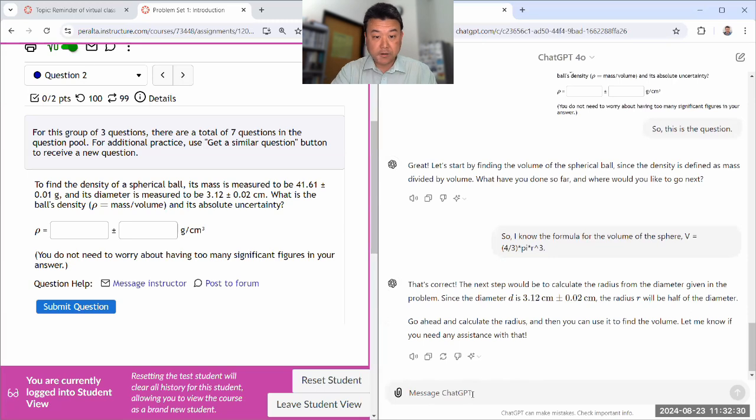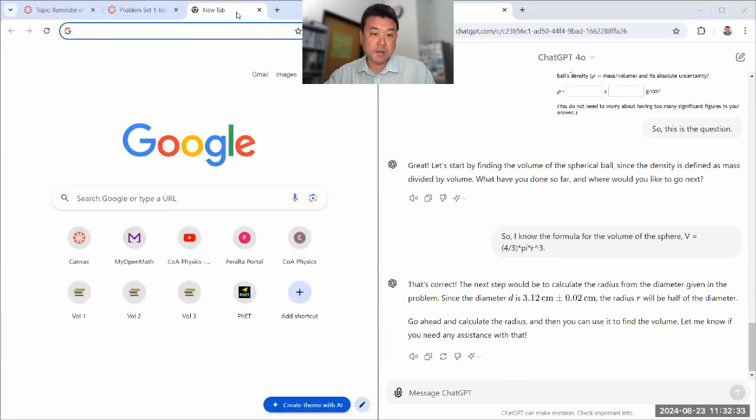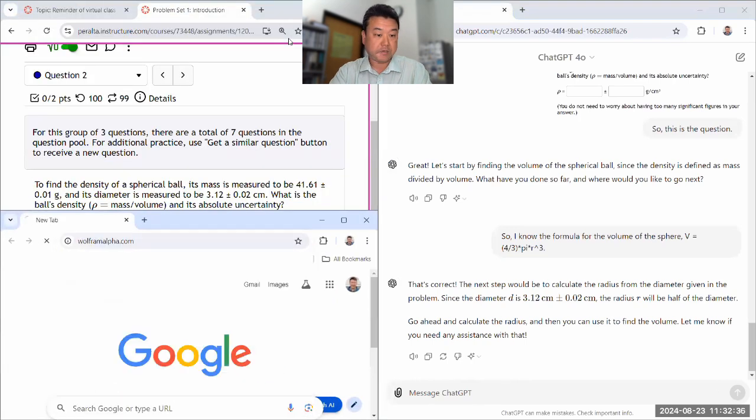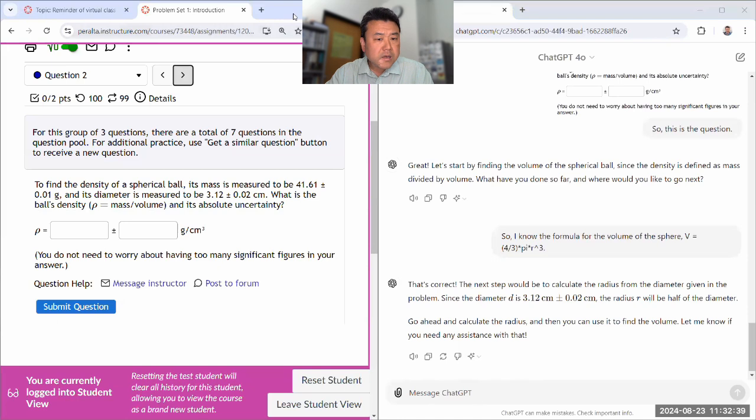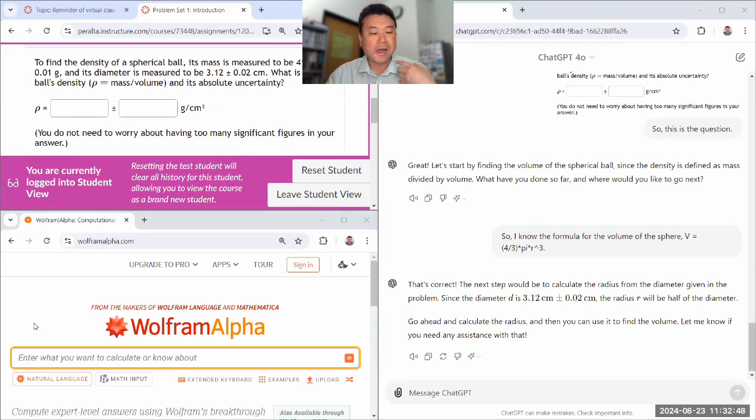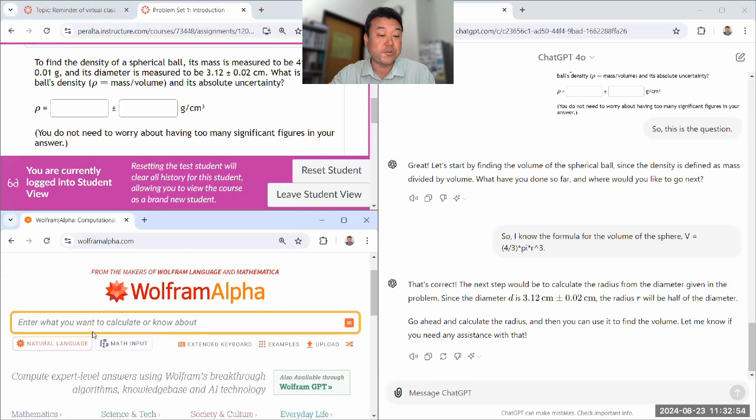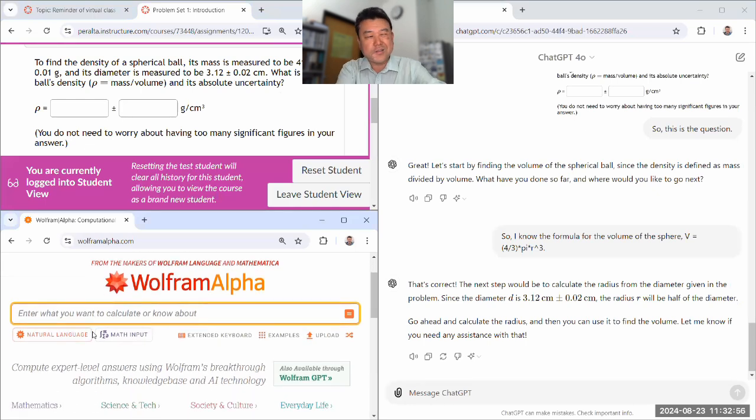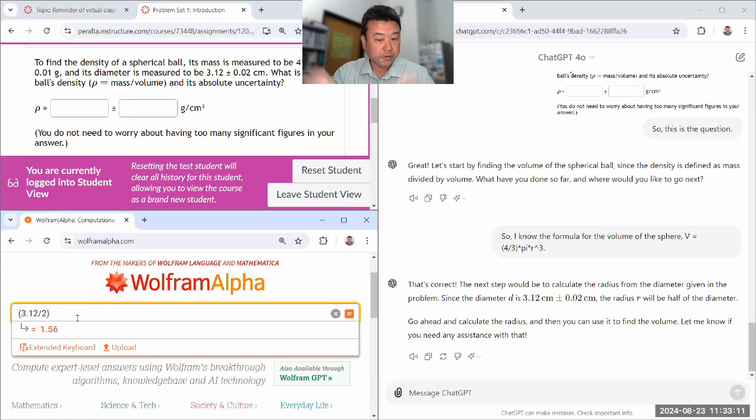So, let's start by finding the value of the spherical ball since density defined. What have you done so far? And so, I know the formula for the volume of the sphere. V is equal to 4 thirds times pi times R squared. Oh, I'm sorry, R cubed. If you don't know that off the top of your head, you might look it up. That can be fun or instructive. Or you might ask ChatGPT, what is the formula for the volume of the sphere?